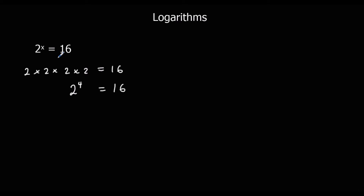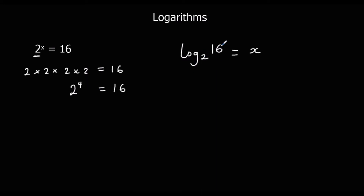We've got 2 to the power of x equals 16, and I'm going to show you how to rewrite that as a log. We have log, and the base is this number here — the base is the number with the power. So it's log with a base 2, and the answer is 16. So log to base 2 of 16 is going to equal our x. So if we type this into the calculator it will give us our answer of 4. These two statements are exactly the same, and as we know this is going to equal 4.